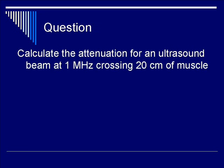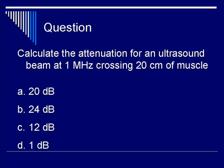Let's do a question to test our knowledge. Calculate the attenuation for an ultrasound beam at 1 MHz crossing 20 centimeters of muscle. Recall that the muscle attenuation coefficient is 1.2 dB per centimeter. The choices are: A, 20 dB; B, 24 dB; C, 12 dB; or D, 1 dB. The correct answer is B, 24 dB.